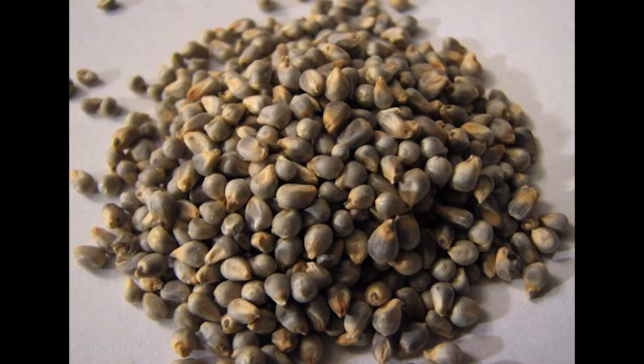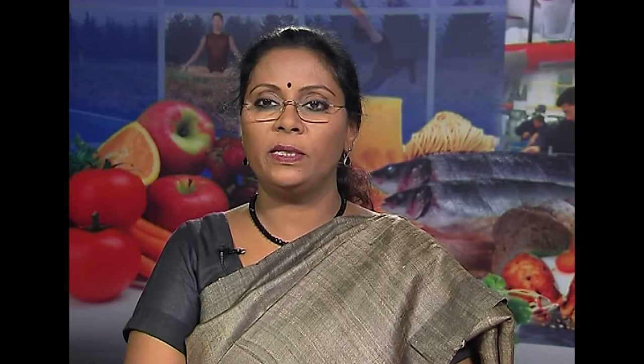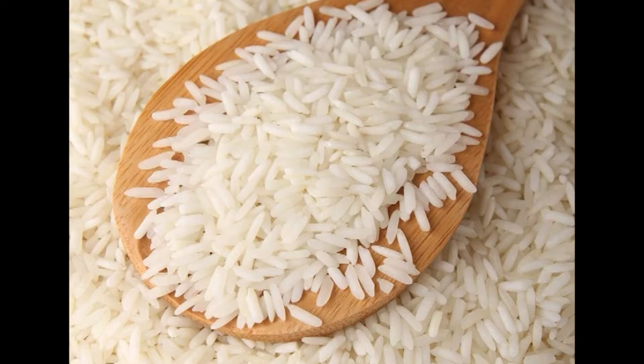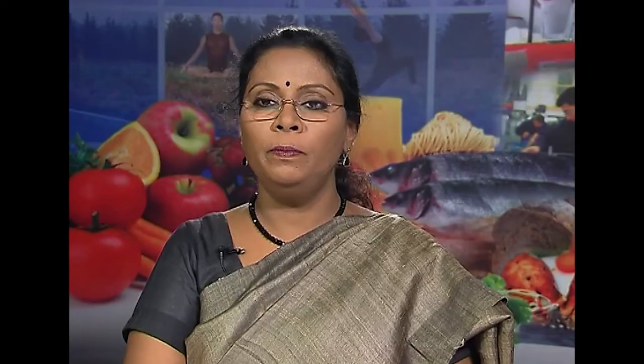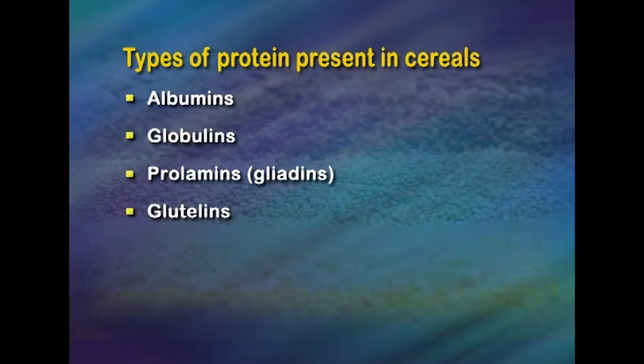Of all the cereals, whole wheat, ragi and bajra contain high amounts of fiber. The protein content of different cereals varies — rice contains less protein compared to other cereals. Higher concentrations of protein occur in the embryo, scutellum and aleurone layer than in the endosperm, pericarp and testa. The types of protein present in cereal grains are mostly albumins, globulins, prolamines and glutelins.